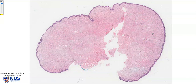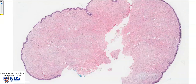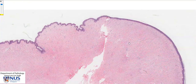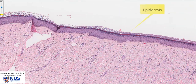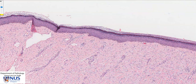We have this oval, firm nodule that extends beyond the confines of the original wound. On the cut surface, we can see that this is covered by benign epidermis, which comprises stratified squamous epithelium and also a keratinized layer of anucleate cells on top.